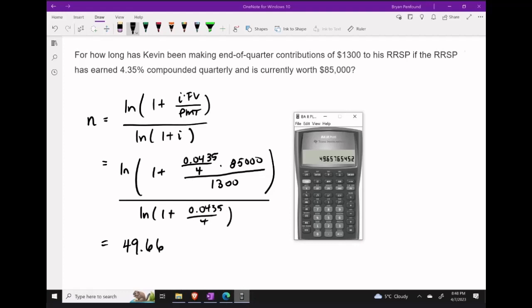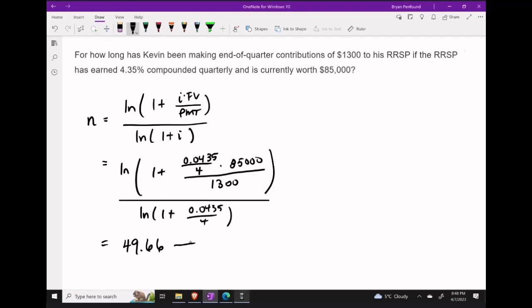This gives us about n is equal to 49.66 and since we need n to be a whole number let's round up to 50.